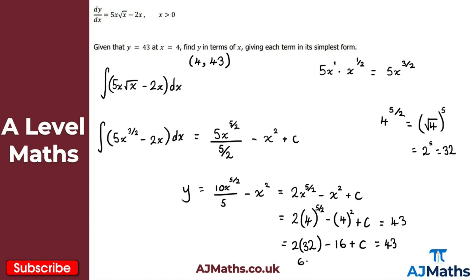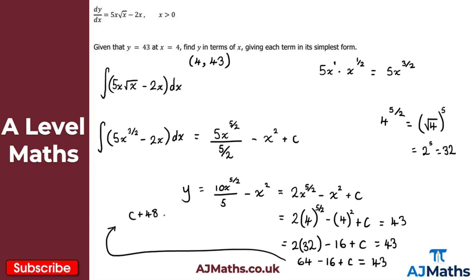So 64 minus 16 plus c equals 43. That gives 48 plus c equals 43. Therefore c equals 43 minus 48, giving c equals minus 5.